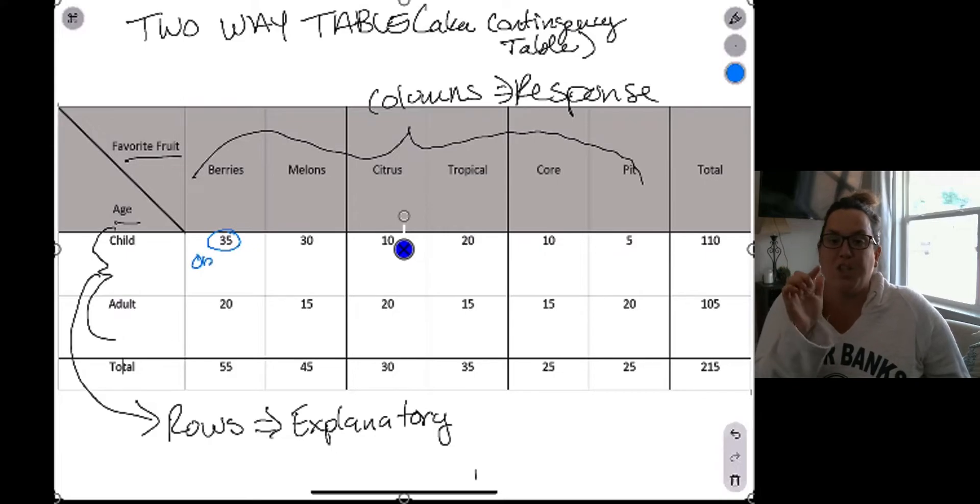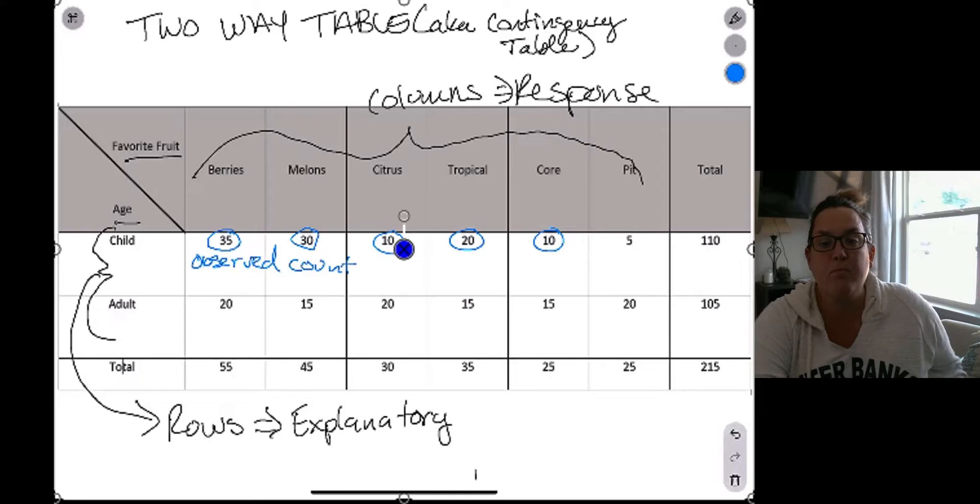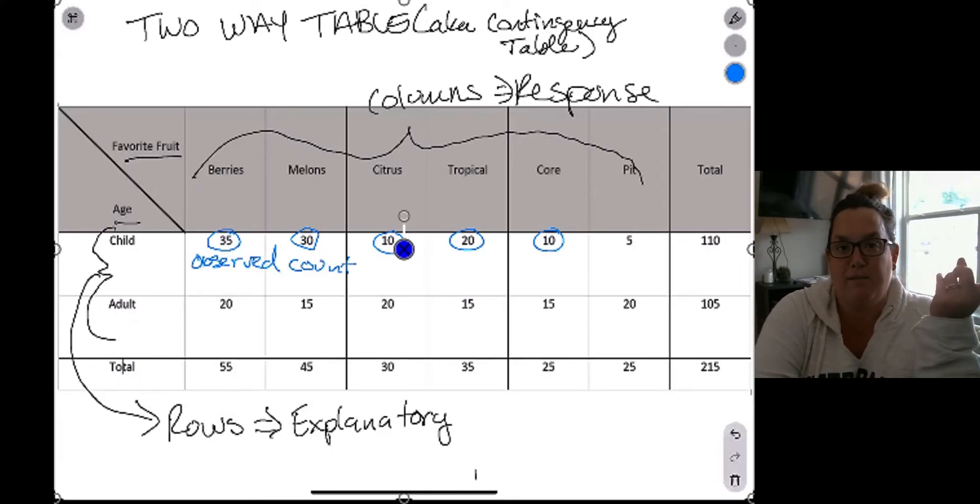Now in each of the cells we have what's called an observed count. So that is a unique combination between the age and the favorite fruit.